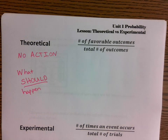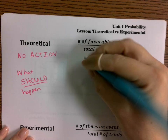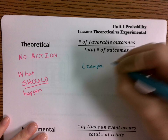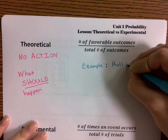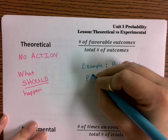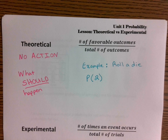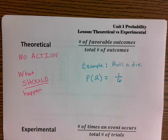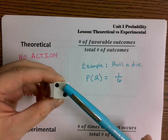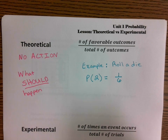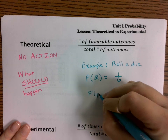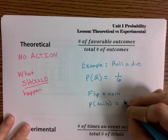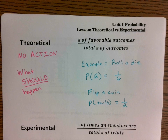So let's write down our examples. If we roll a die, the probability that it's going to land on a two is one out of six — there's only a single value of two on this die out of the six values. If I flip a coin, then the probability that it's going to land on tails is one out of two. These are all theoretically what should happen.